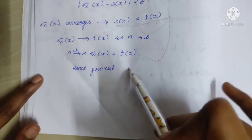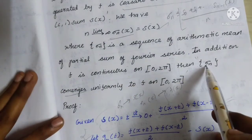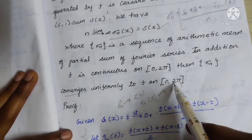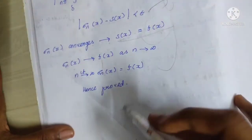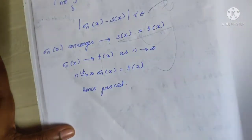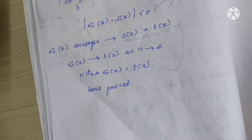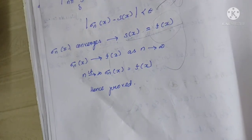So we have proved this condition. If you know this sequence, σₙ converges uniformly to f on the closed interval [0, 2π]. That's what we proved. I hope you understand. Thanks for watching. Keep supporting our channel Mathmenta Tamil. If you are not subscribed, please do share and subscribe. Thank you so much guys.